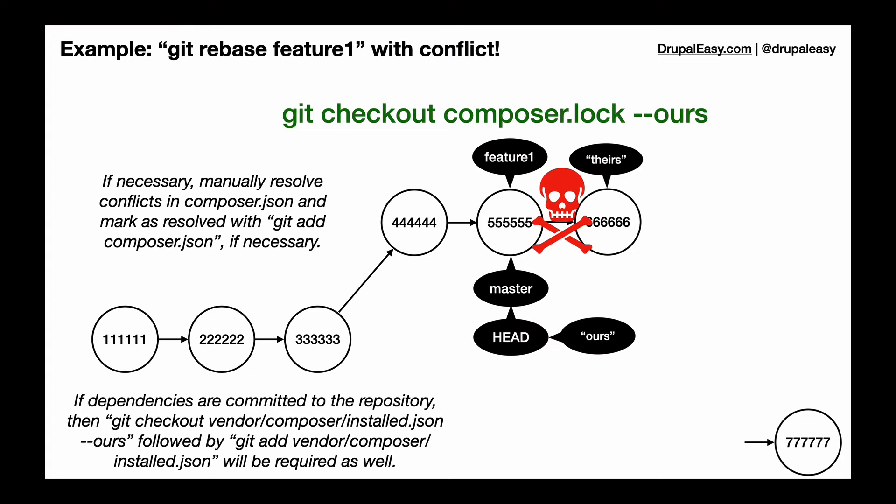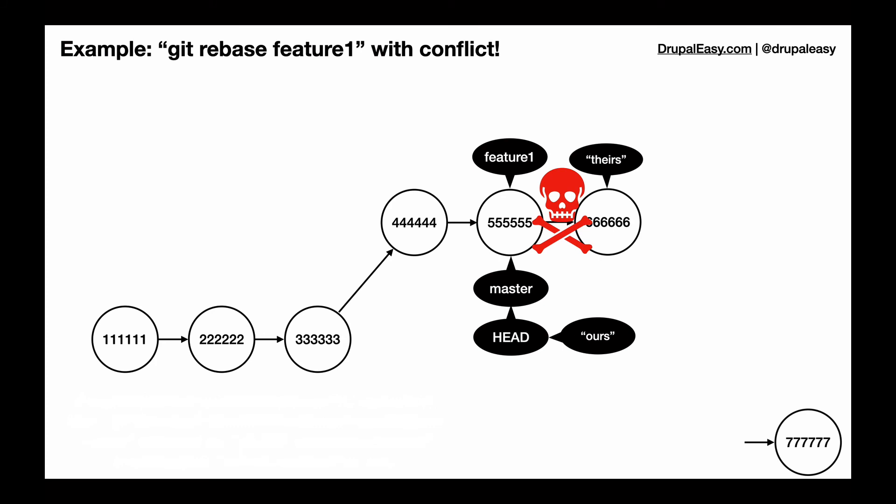So once we check that out, normally at this point everything is now out of conflict, but our composer.lock is still not up to date because we chose the version that was in the 555 commit, but we need to update it with the changes that are also in the 666 commit. So what we're actually going to do is regenerate that composer.lock file.